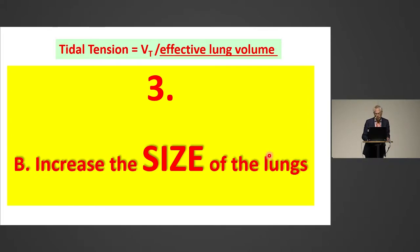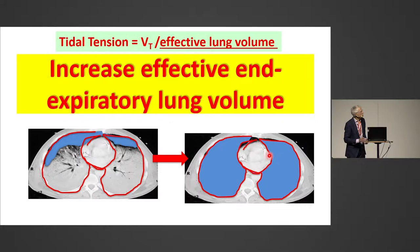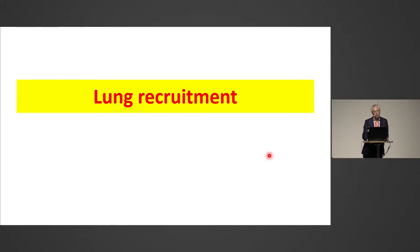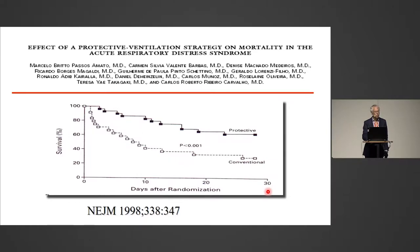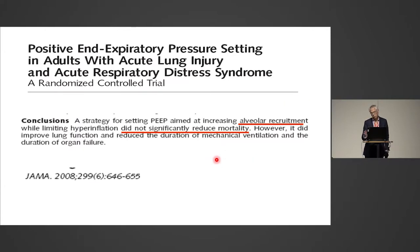Now I come to the third fundamental: size of the lungs. If you increase the size, you reduce the tidal tension. You can do this by increasing the effective expiratory lung volume — that is, lung recruitment. You should not do it by overdistension. We know from experimental studies in our lab that 72 hours of ARDS net ventilation versus 72 hours of open lung ventilation shows much less inflammation on PET studies with open lung. The study by Amato et al. found that open lung ventilation in early-phase ARDS improved survival compared to conventional ventilation. But other studies with late and early ARDS mixed couldn't find a survival benefit with open lung ventilation or lung recruitment.